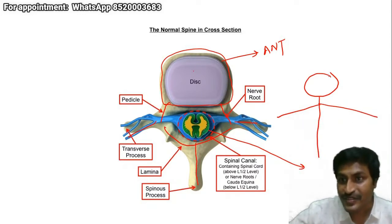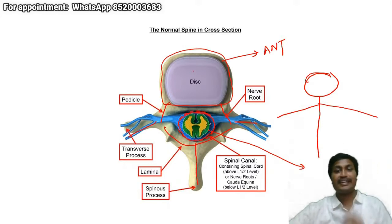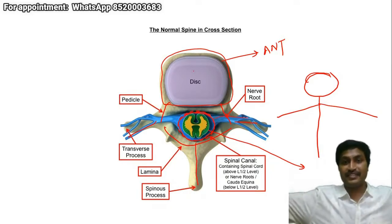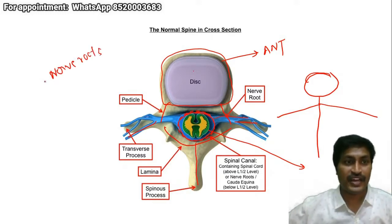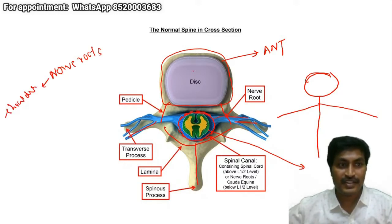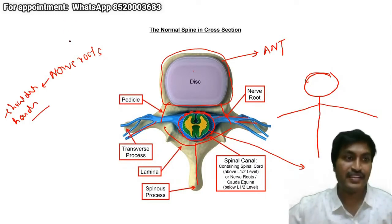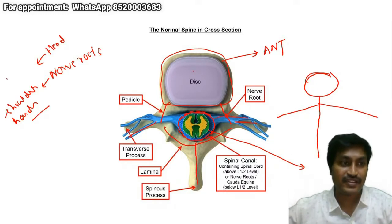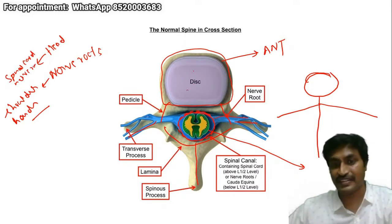So probably you have understood. This head-like structure — what you are seeing is the thecal sac with the spinal cord, either the spinal cord or the spinal nerve roots. These hands which you are seeing — the shoulders and the hands — they form the nerve roots. So nerve roots are formed by the shoulders and the hands, whereas the head forms the spinal cord and nerve roots within the thecal sac. This is very important. I will come to this structure later on.